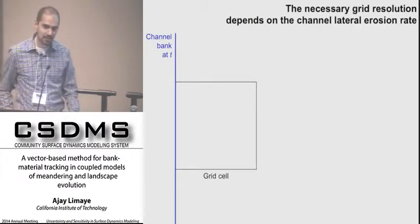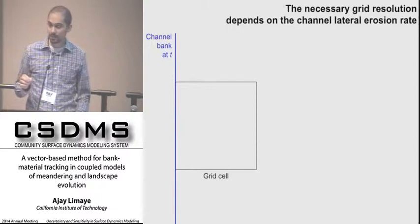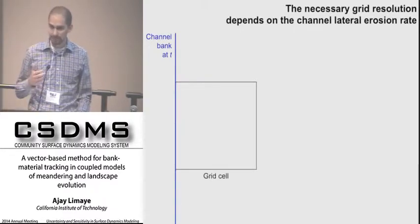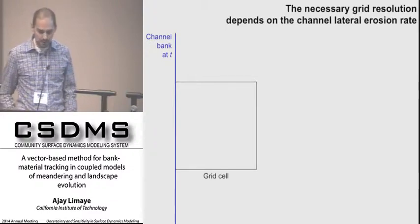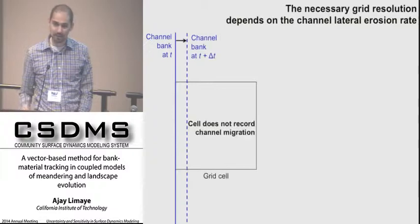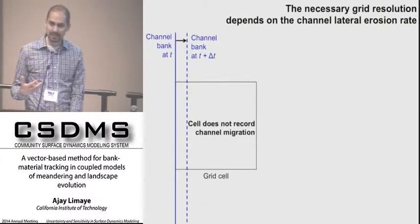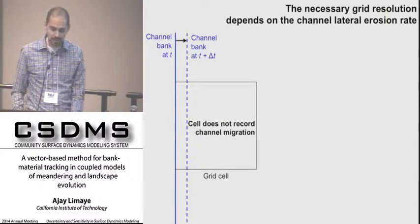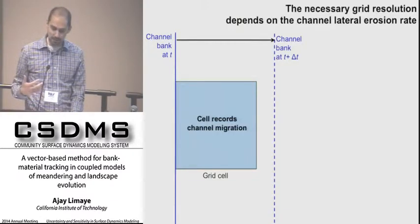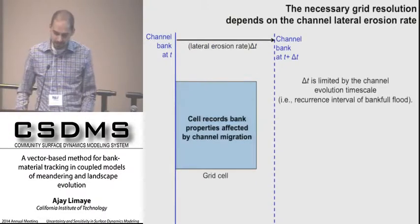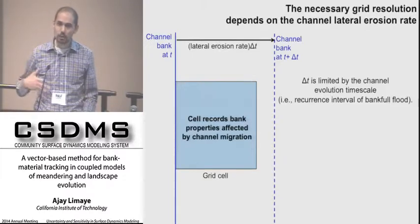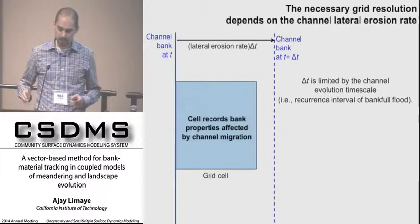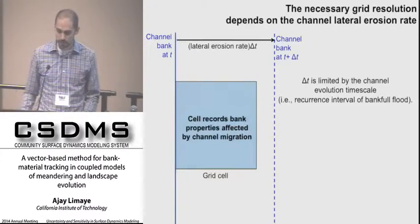Zooming into the scale of an individual grid cell, the necessary grid resolution to overcome this resolution dependence depends on how fast the channel is moving. If a channel boundary moves only a small fraction of a grid cell width in a time step, the cell will not record that increment of migration. But if the migration is substantially larger than the cell, it can be recorded. The distance moved per time step equals the lateral erosion rate times the time step.